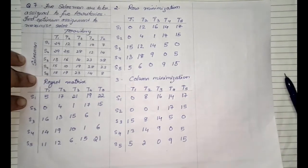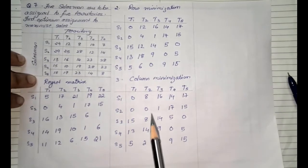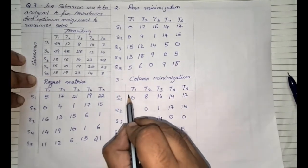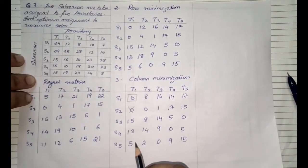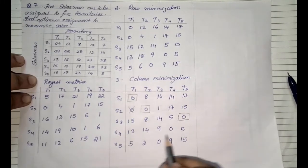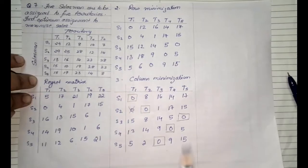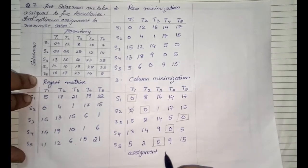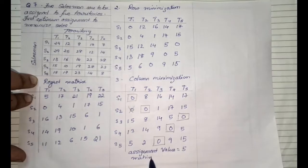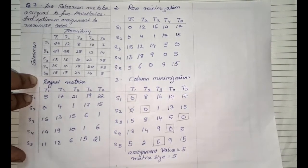Once row and column minimization are complete, we assign the zeros. Row-wise, those rows with only one zero are assigned first. In the first row there is only one zero — we assign that and cross out other zeros in that column. In the second row there is again only one zero, we assign that. In the third, fourth, and fifth rows similarly there is one zero each, and we assign all of them. We check: the number of assignment values is 5 and the matrix size is also 5. Therefore we have an optimal solution.